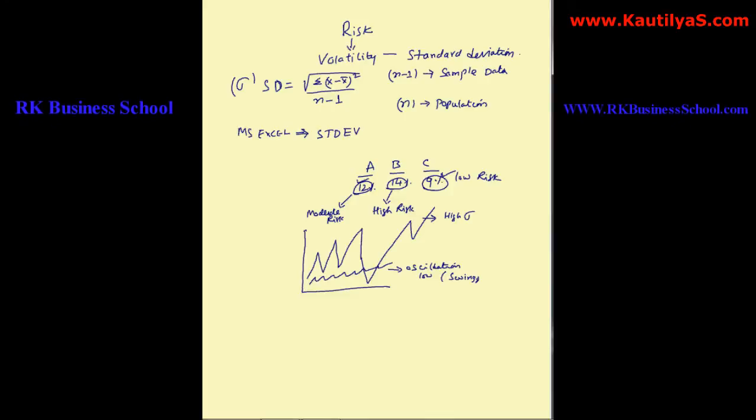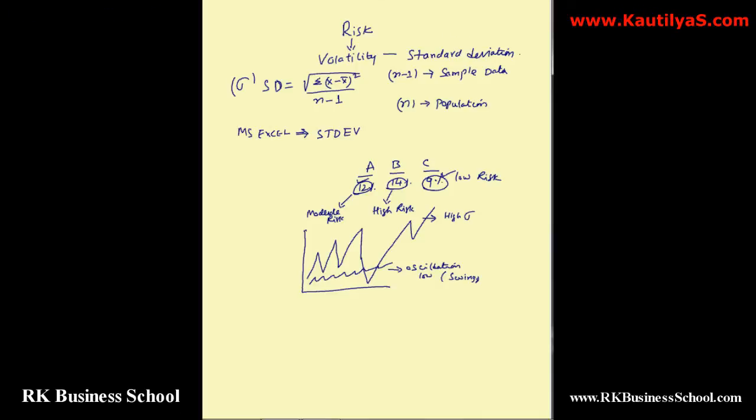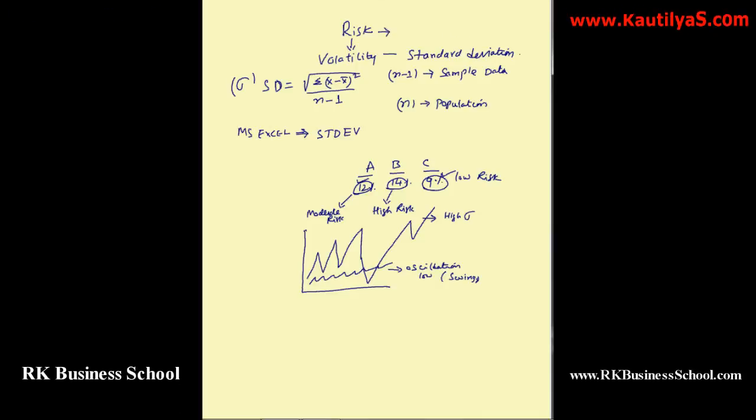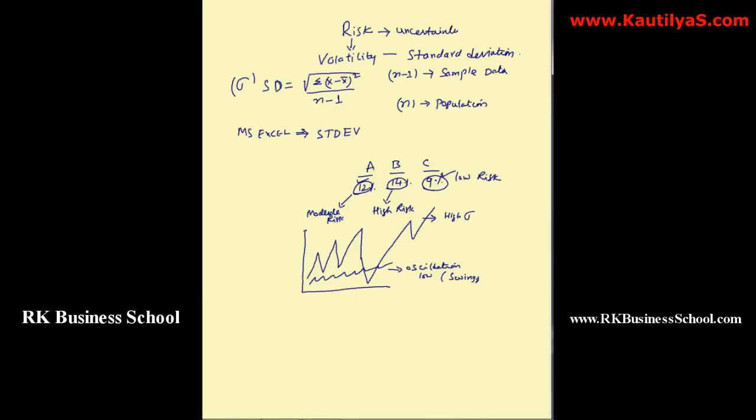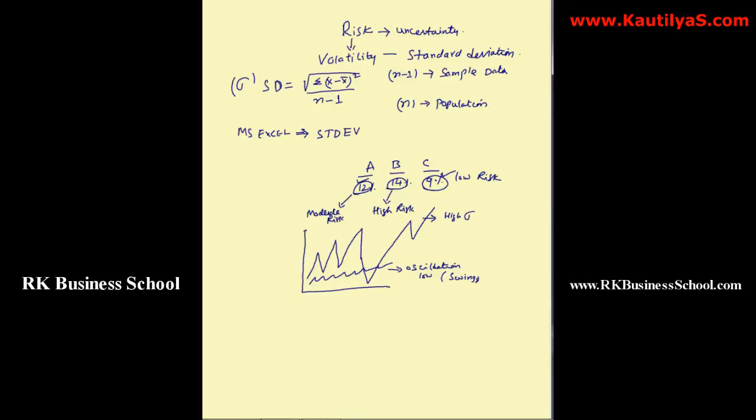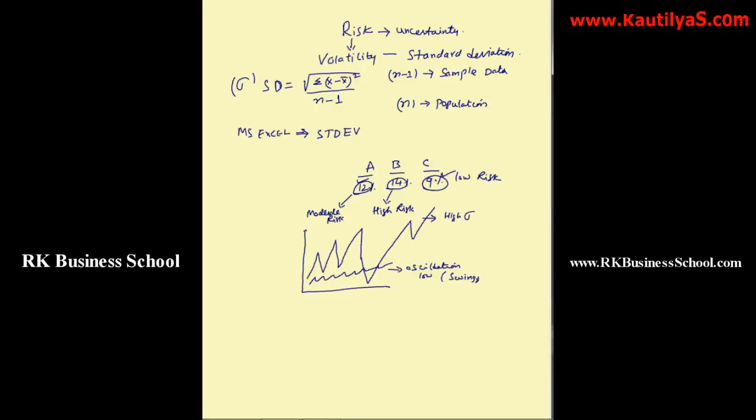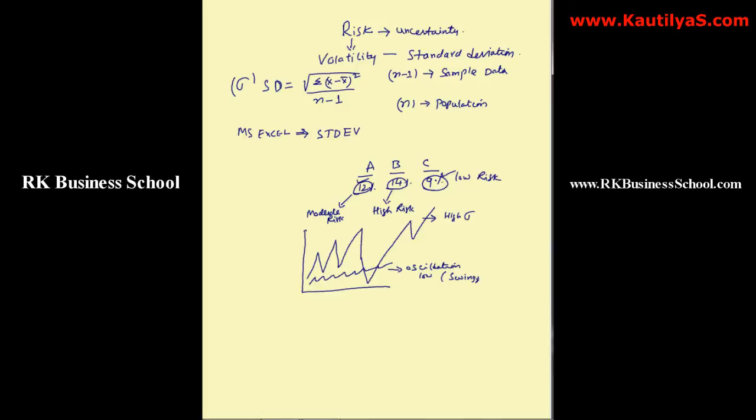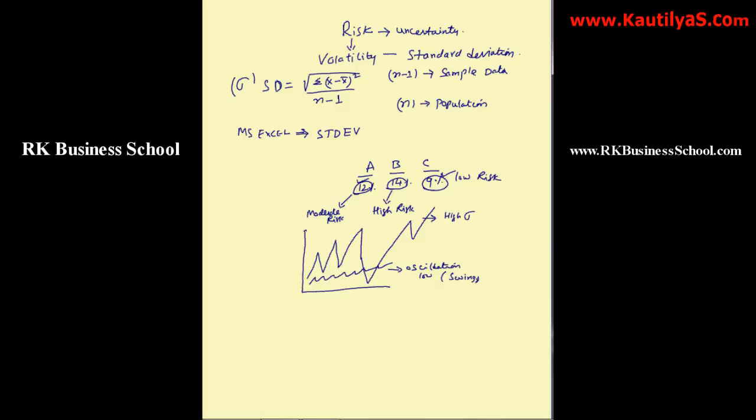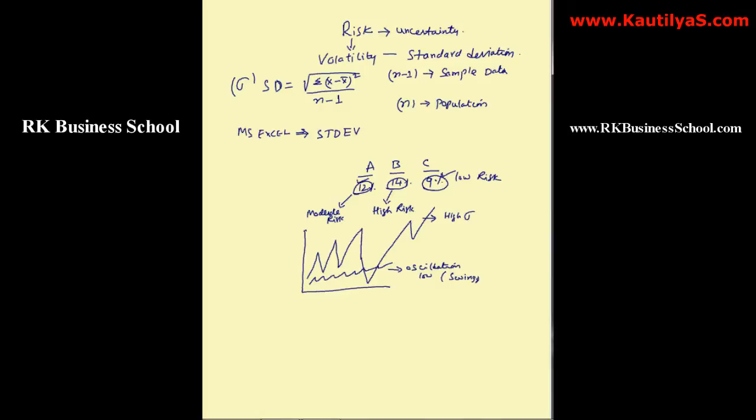Just by looking at the percentage of standard deviation, whether it is low or high, we can assume the swings or oscillations. As the swings are more, it will become very difficult to predict. Risk is also called as the uncertainty. Whenever stocks with high uncertainty are highly unpredictable and stocks with low uncertainty are predictable. So this is how we interpret the risk.